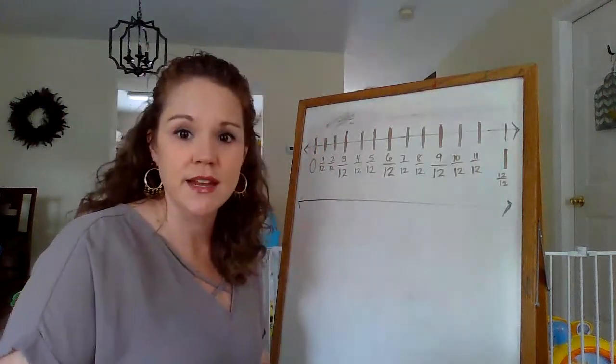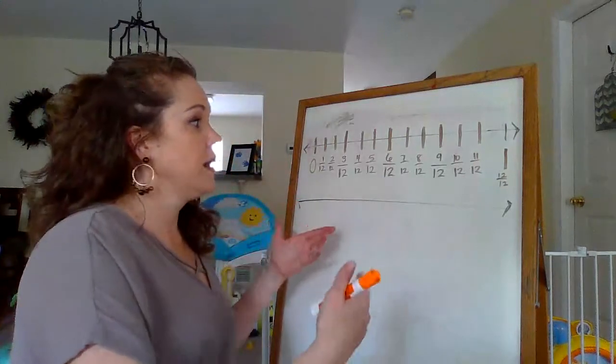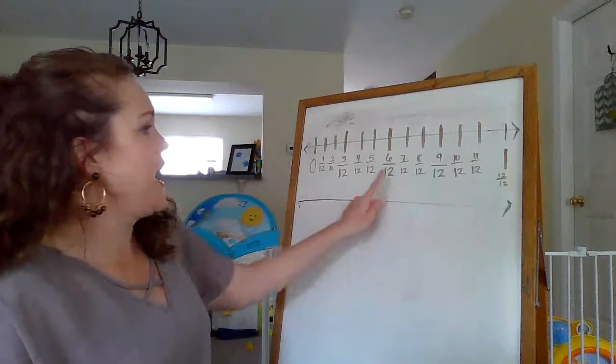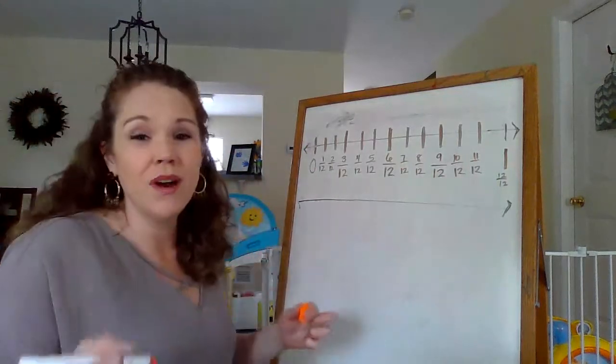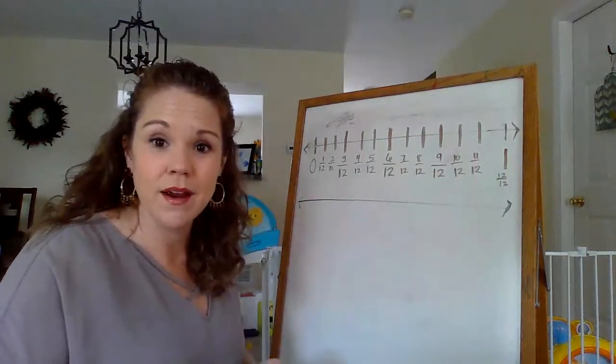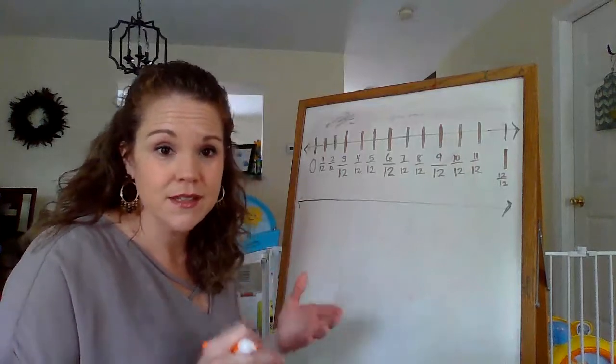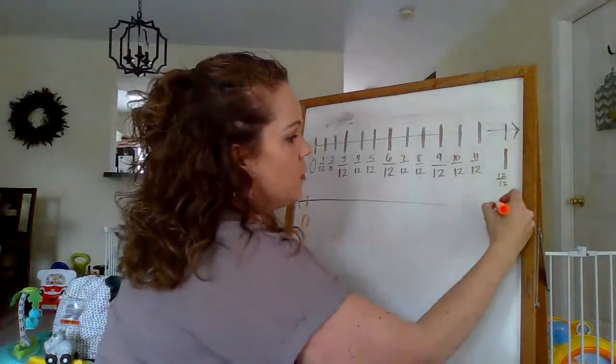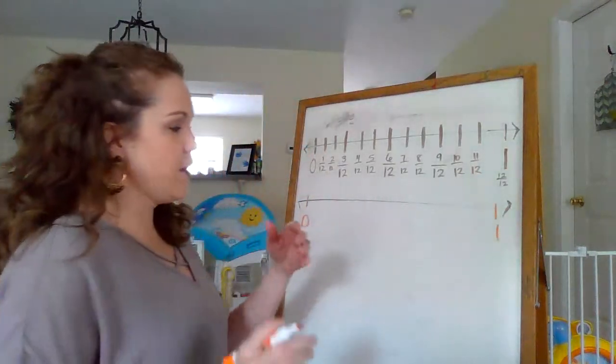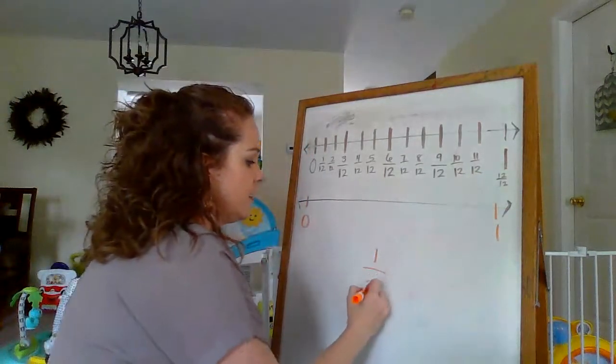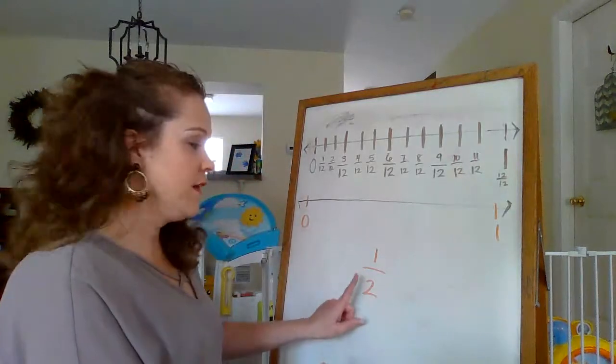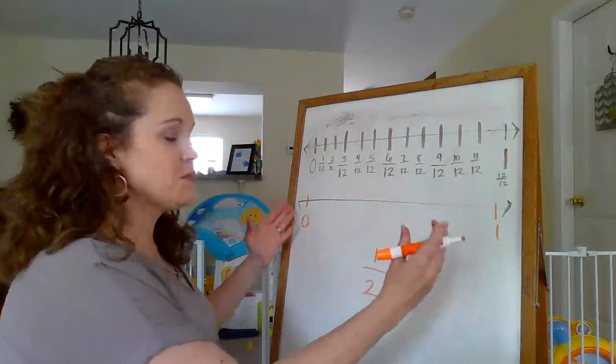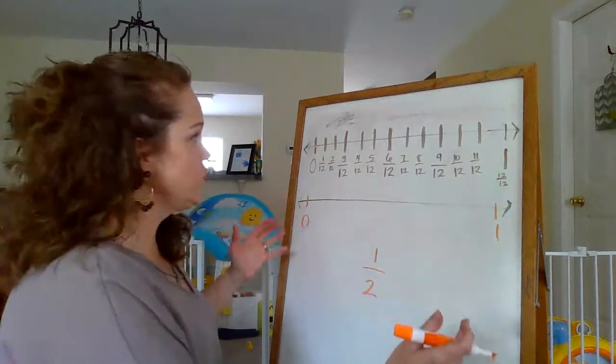So let's say someone said, okay, the answer to my problem is half, but I don't see half up here. So what can I do to see where it is comparing itself to twelfths? So what I could do is I could put a zero and I could put a one and I could say, okay, I know that half means that in a fraction, that means there's two parts.